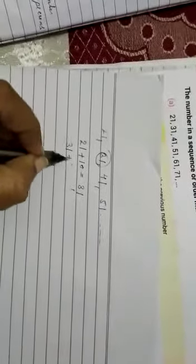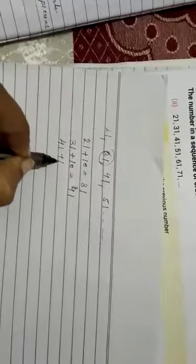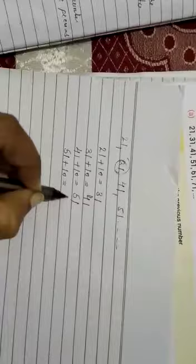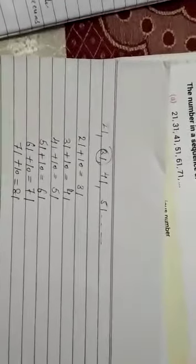Each number is increased by 10. So we add 21 plus 10 equals 31. Now take 31 and add 10, we get 41. 41 plus 10 equals 51. 51 plus 10 equals 61. 61 plus 10 equals 71. 71 plus 10 equals 81. It means to get the next number, we have added 10 to the previous number.